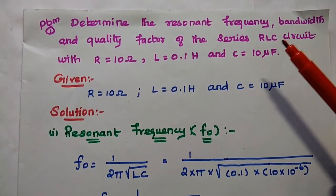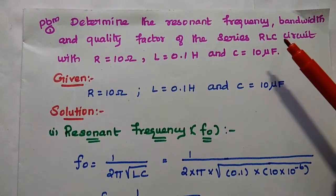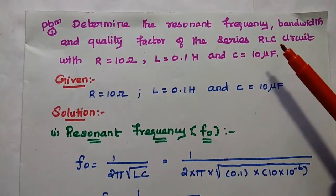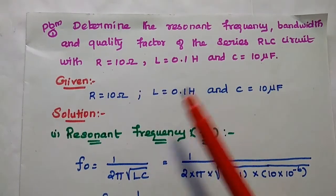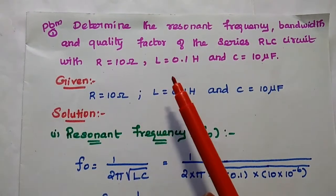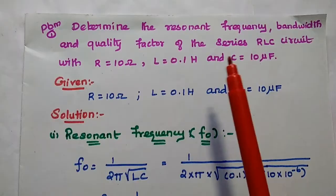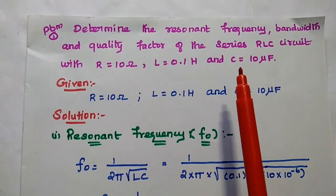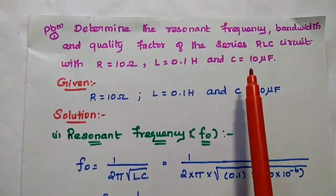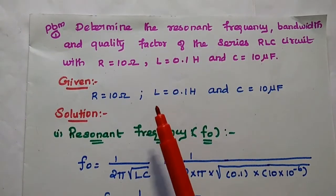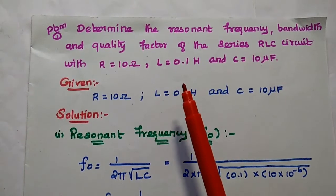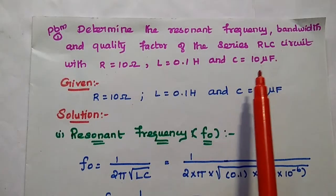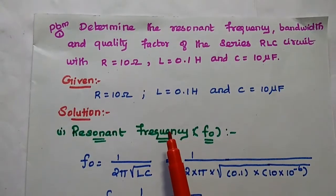Dear students, now we are going to solve important problems in series RLC circuit at resonant condition. The first problem: determine the resonant frequency, bandwidth and quality factor of the series RLC circuit with the given values R equal to 10 ohm, L equal to 0.1 henry and capacitance equal to 10 microfarad.